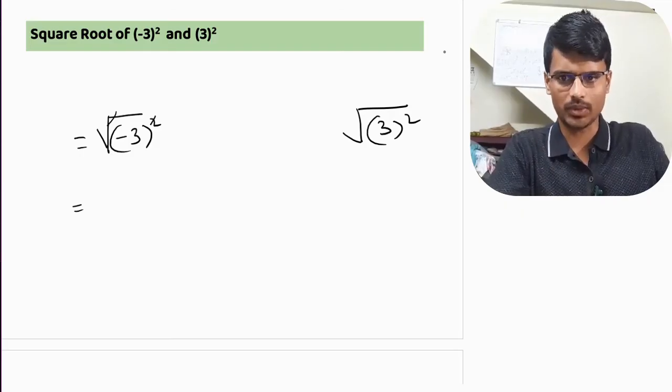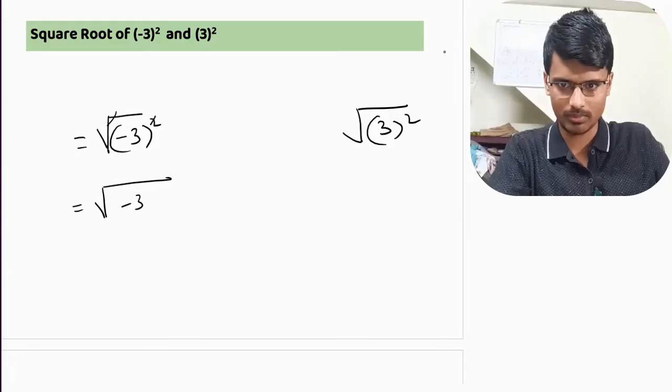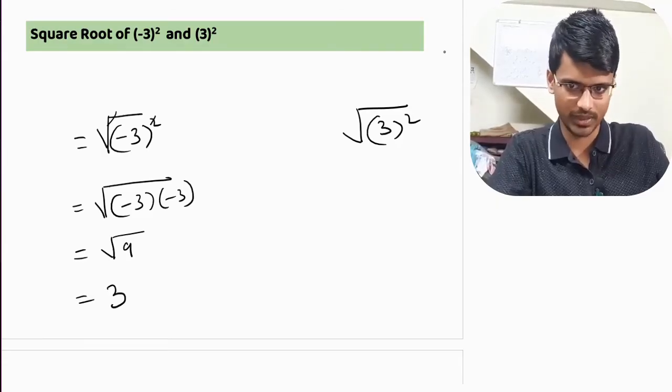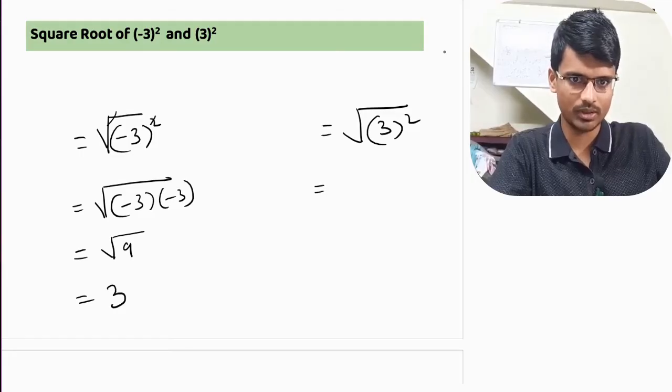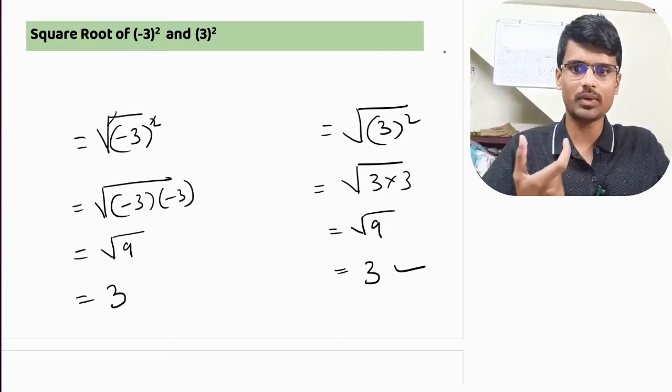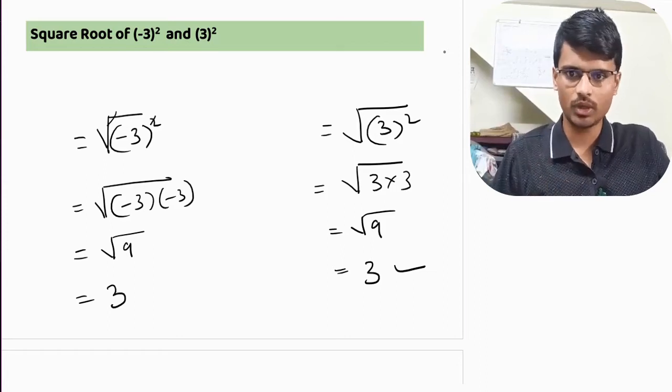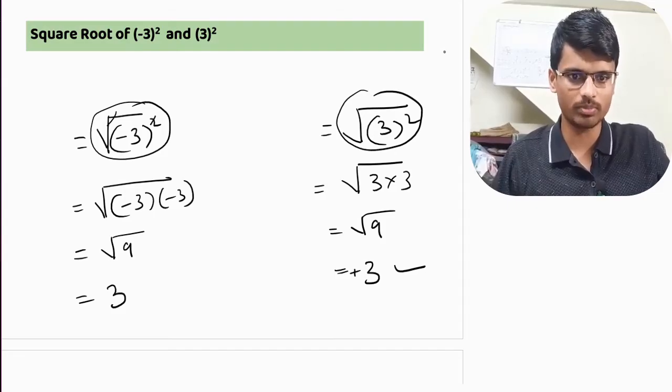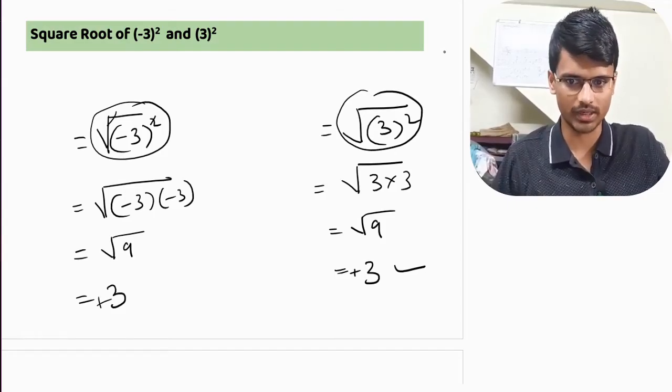Let us try to understand. Let us see minus three into minus three, which is nothing but nine. And square root of nine, we already know, that is three. It is plus three. There is a very important observation here.